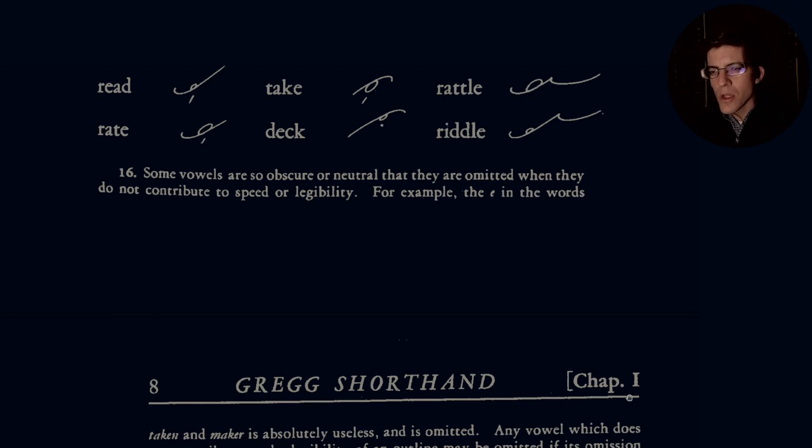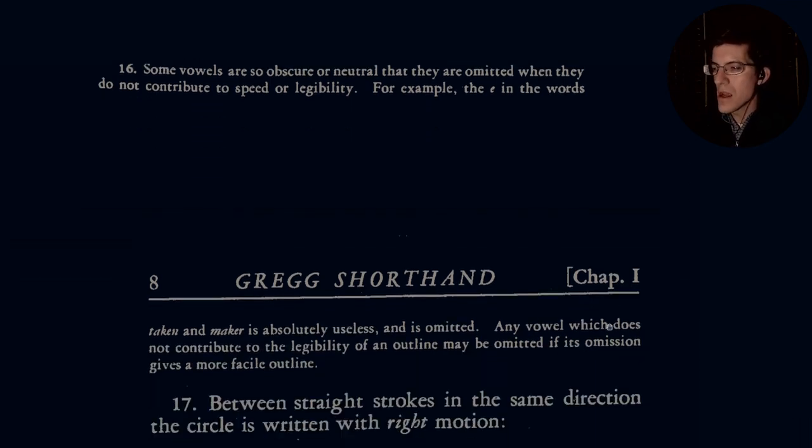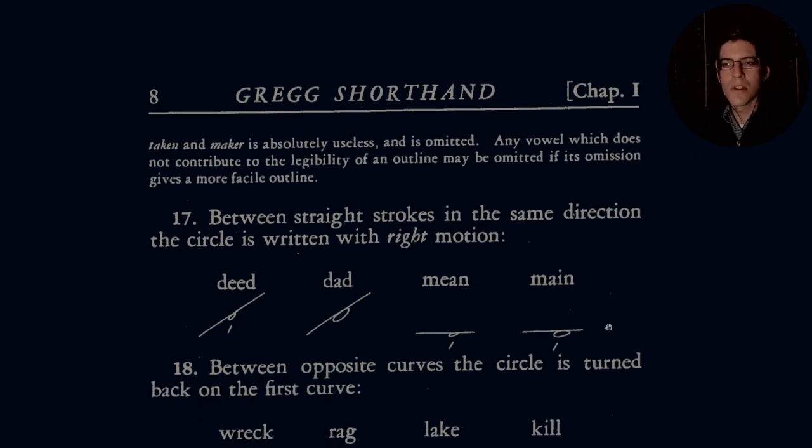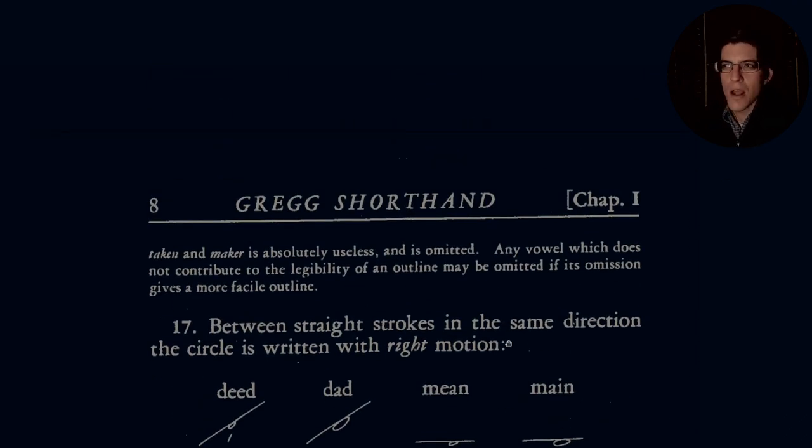Section 16, some vowels are so obscure or neutral that they are omitted when they do not contribute to speed or legibility. For example, the E in the words taken and maker is absolutely useless and is omitted. Any vowel which does not contribute to the legibility of an outline may be omitted if its omission gives a more facile outline. If it's a schwa, if it's even a consonant that is thrown away in passing, you don't need it. I was actually thinking a word like fifth. You can say fifth and you still get the sentence. If you just want to say fifth versus fifth, you can easily do that because it would still be understandable as the word fifth.